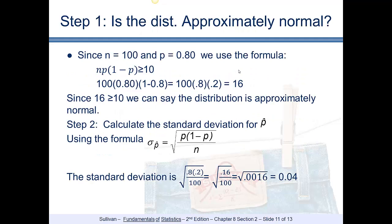First, we have to determine whether the distribution is approximately normal. Since the sample size is 100 and the population proportion is 80%, we use the formula: n times p times (1 minus p) must be greater than or equal to 10. That gives us 100 times 0.8 times 0.2, which equals 16. Since 16 is greater than or equal to 10, we can say the distribution is approximately normal.